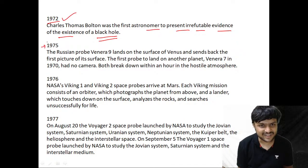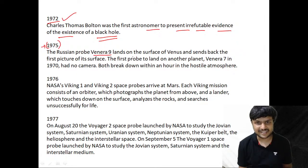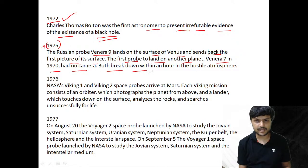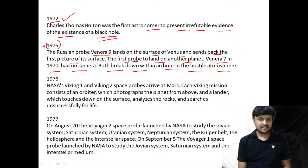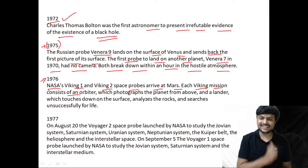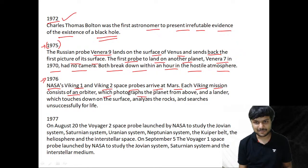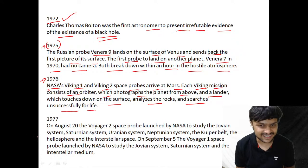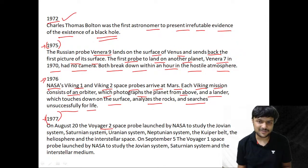In 1975, the Russian probe Venera 9 lands on the surface of Venus and sends back the first pictures of its surface. The first probe to land on another planet, Venera 7 in 1970, had no camera and broke down within an hour in the hostile atmosphere. In 1976, NASA's Viking 1 and Viking 2 probes arrive at Mars — each consisting of an orbiter and a lander that touches down, analyzes rocks, and searches — unsuccessfully — for life.